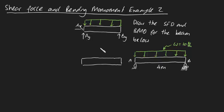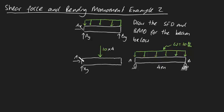For the sake of calculating the reaction forces, I'm going to replace this uniformly distributed load with an equivalent point force, which will be the force per unit length — 10 — times by the length, which is 4 meters. This is something you can only do for finding the reaction forces. Now let's apply our static equilibrium equations. We know the sum of forces in the X direction is equal to zero, which means Ax is going to be equal to zero.